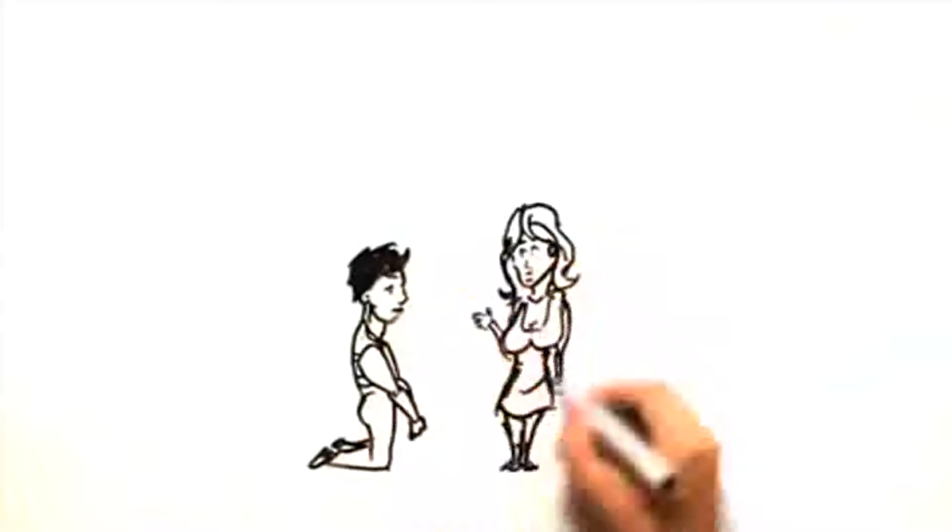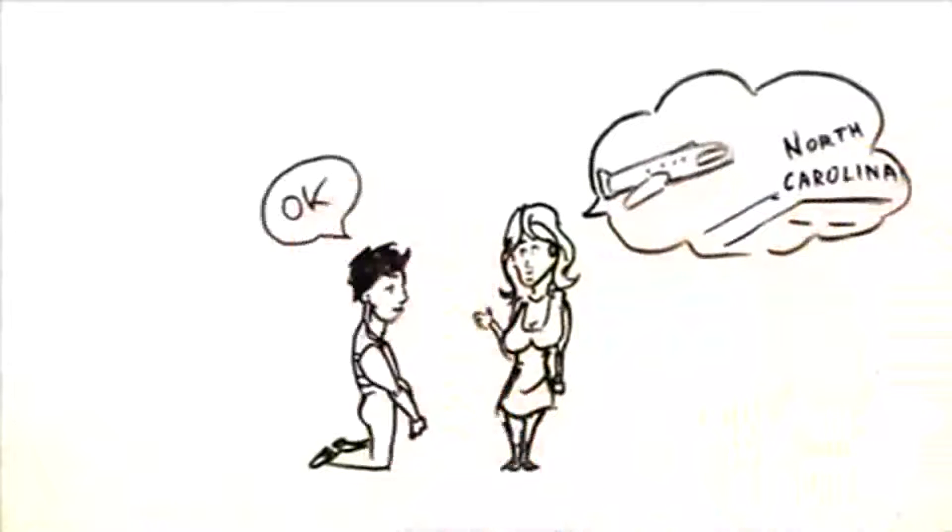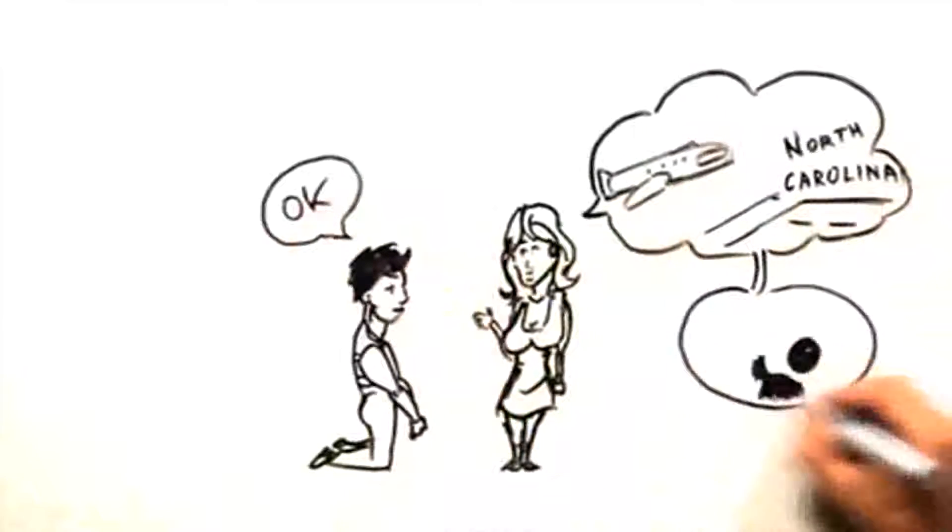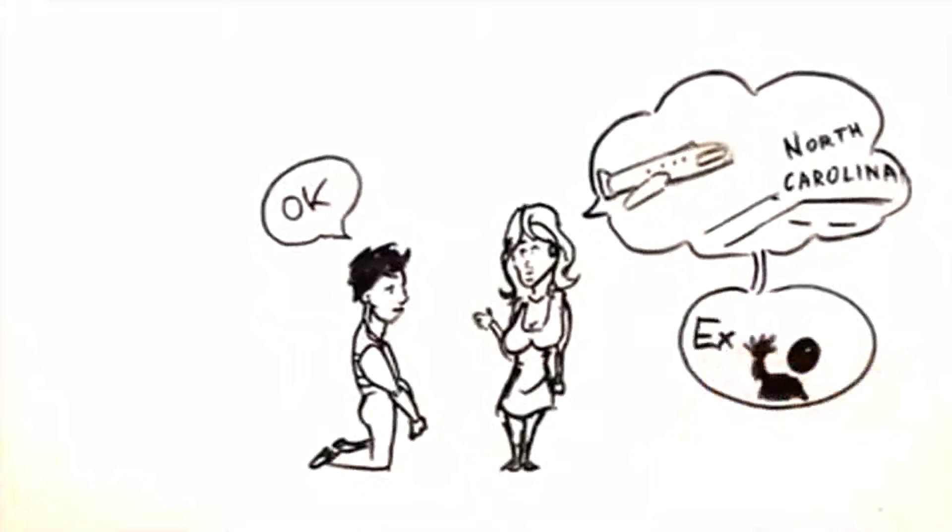Listen, back then, the old Josh did anything she wanted. If she wanted to move to North Carolina, I said okay, let's go. She wanted to keep in touch with her ex-boyfriend. I told her, it's okay, I understand.